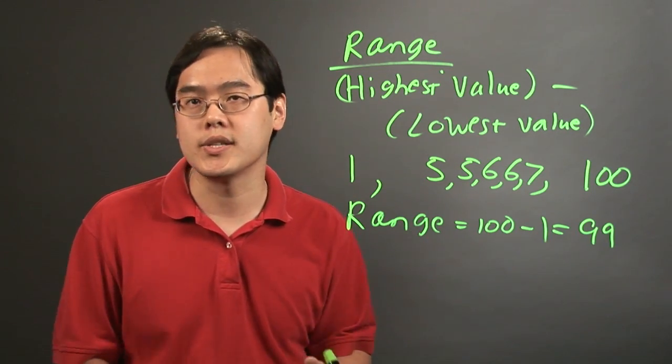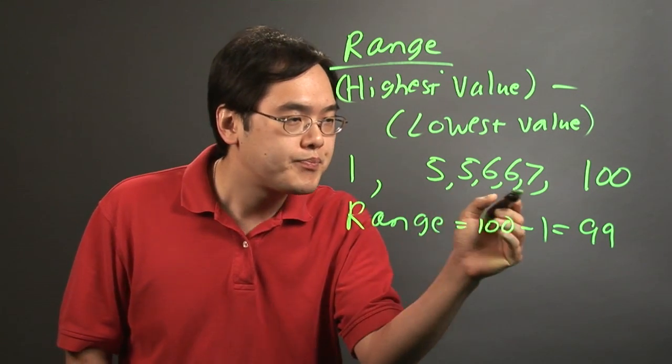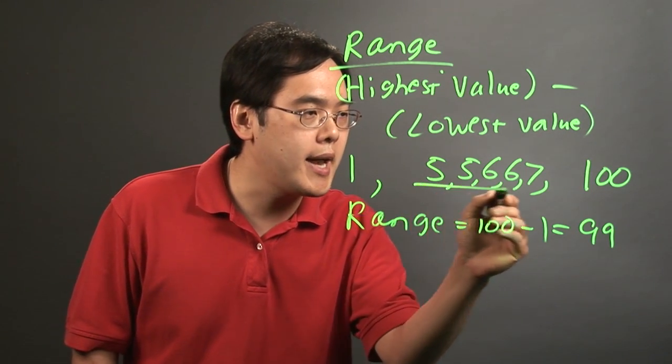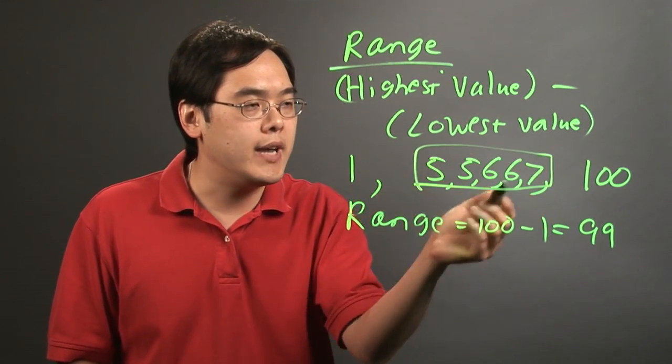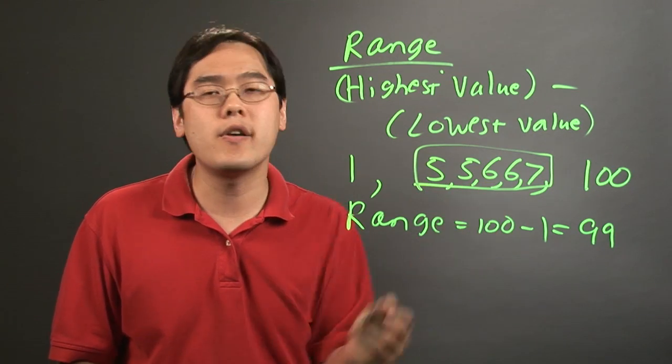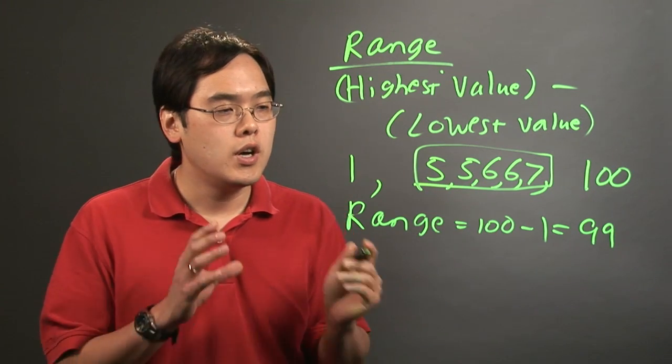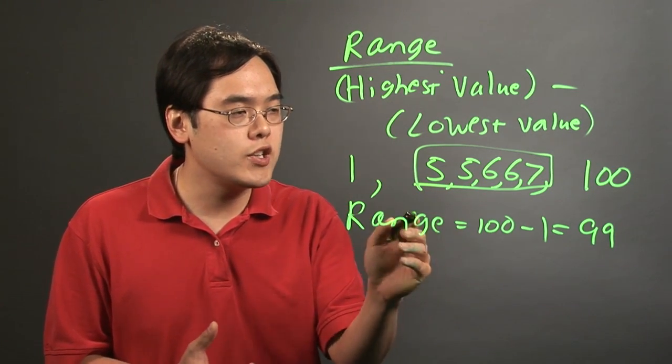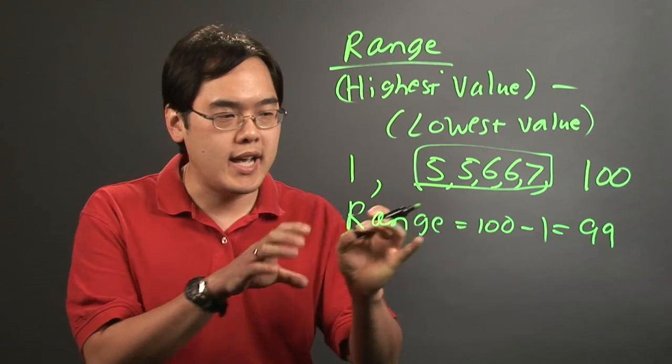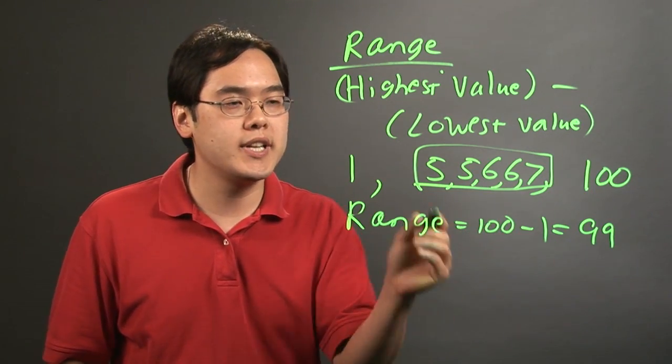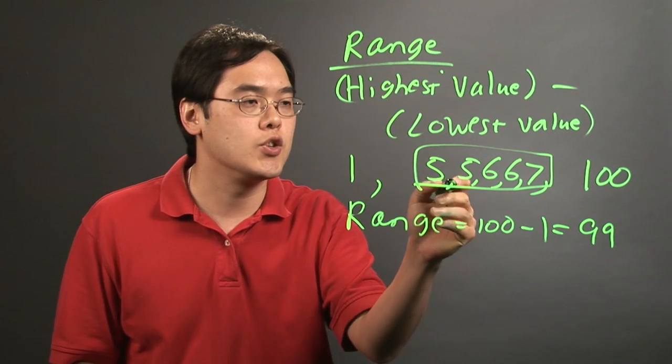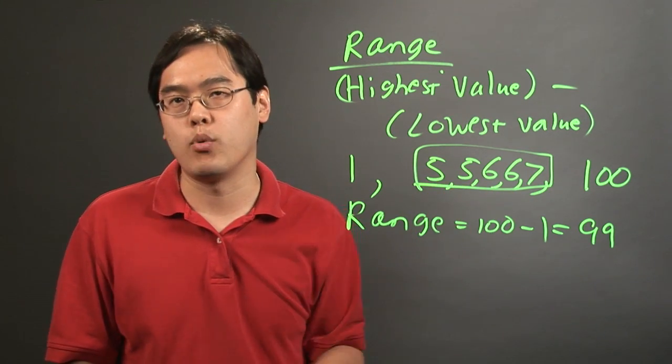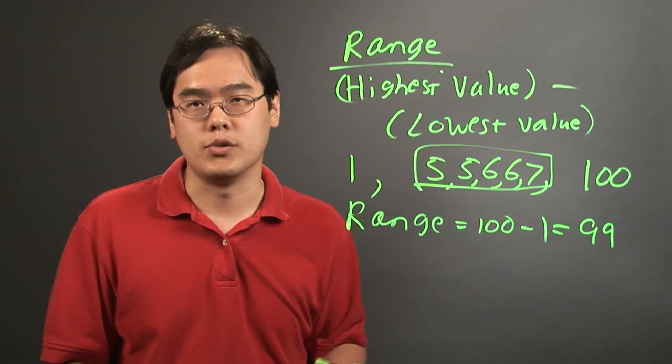But what it doesn't tell you, and here's a weakness of the range, is that the range won't tell you that a majority, 5 out of 7 data points, are very, very close together. So when it comes to the range, it only gives you the absolute spread out, highest minus lowest, but it doesn't really give you a closer picture as to how closely the data points can be close together.